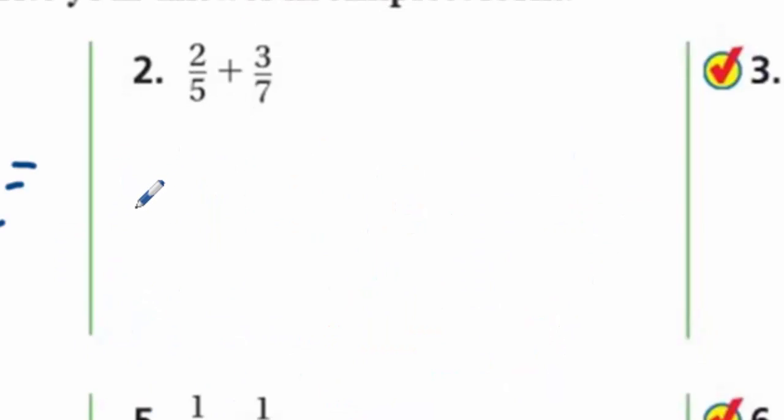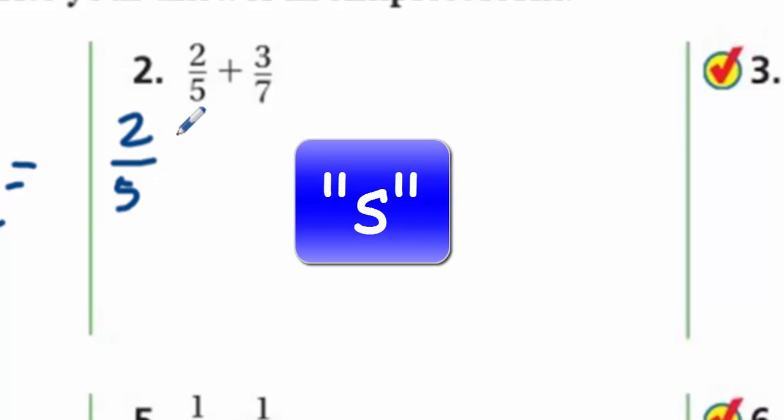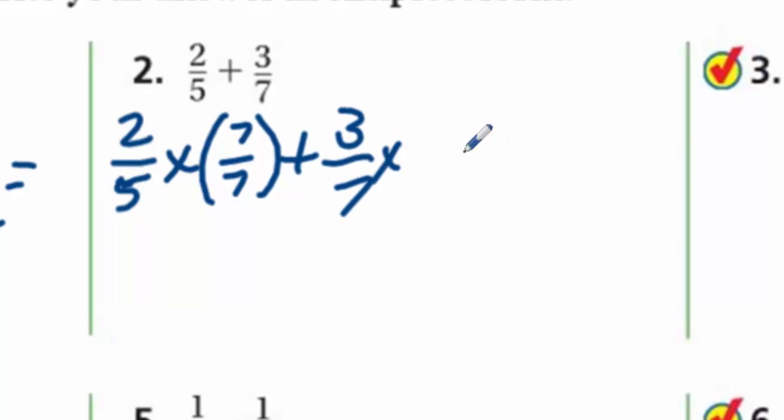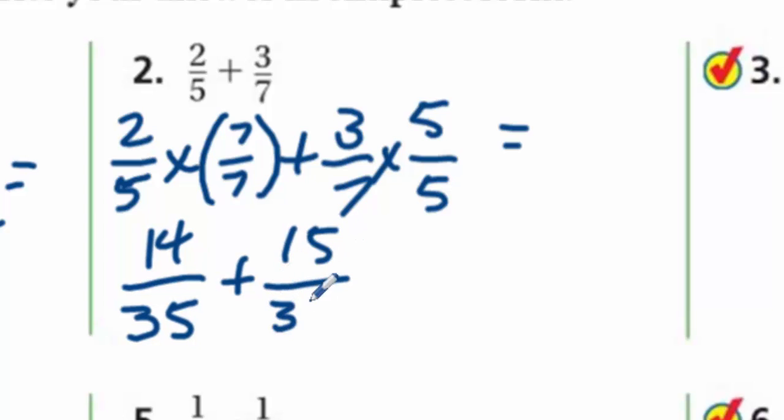Problem number two. You can always get a common denominator by multiplying the fractions. Seven times five is thirty-five. I'm going to write two-fifths, and I'm going to multiply that by seven over seven to get that denominator that's the same. Then, I'm going to take my three-sevenths times five over five. If I multiply across, I get fourteen over thirty-five. Three times five, which is fifteen over thirty-five. Now, I just need to add twenty-nine over thirty-five. Twenty-nine is a prime number.